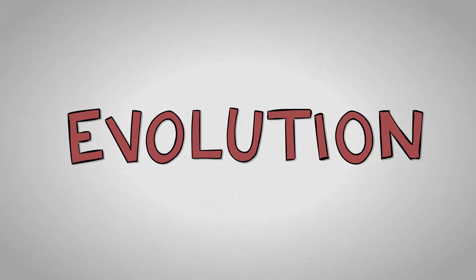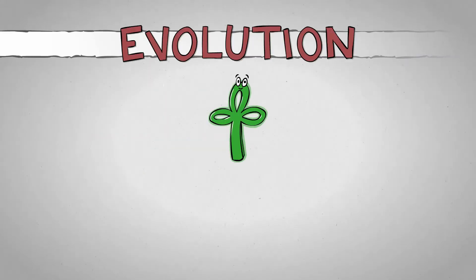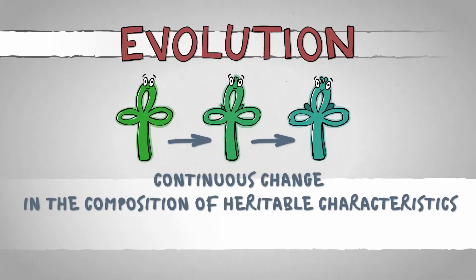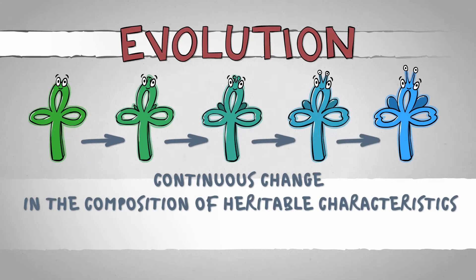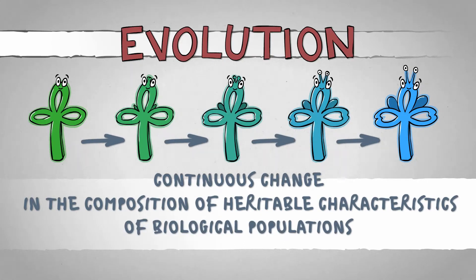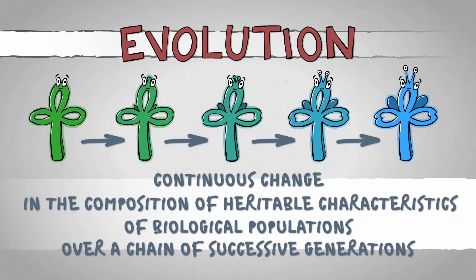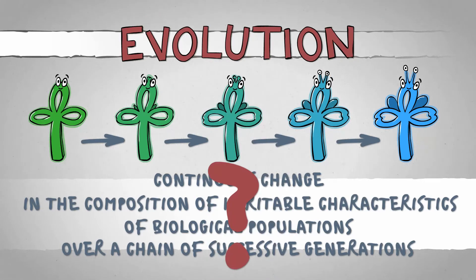Which means what, exactly? Evolution of life is the continuous change in the composition of heritable characteristics of biological populations over a chain of successive generations. Uh, what?